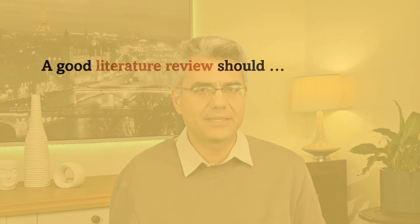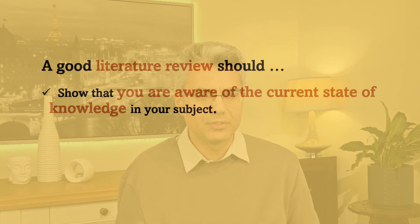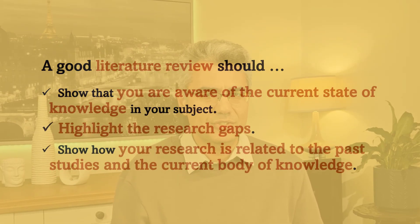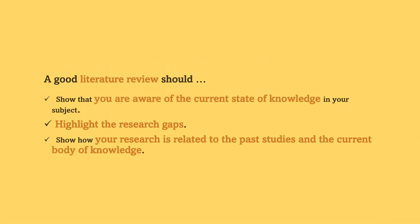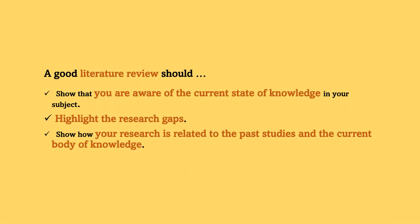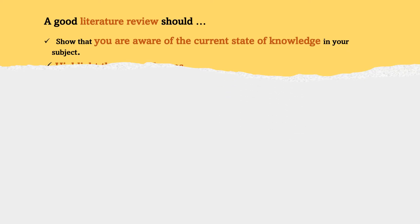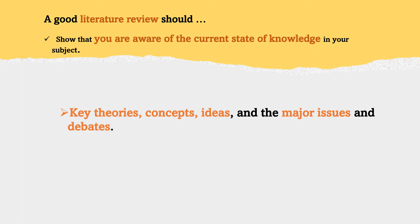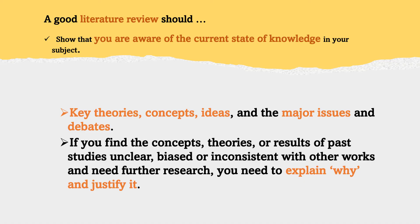At the end, your literature review should demonstrate that you are aware of the current state of knowledge in your field, highlight the research gaps, and show how your research is related to past studies and the current body of knowledge. A good literature review should show that you understand your field and its key theories, concepts, and ideas, as well as the major issues and debates around your topic. If you find the concepts, theories, or results of past studies unclear, biased, or inconsistent with other works and in need of further research, you need to explain why and justify it.